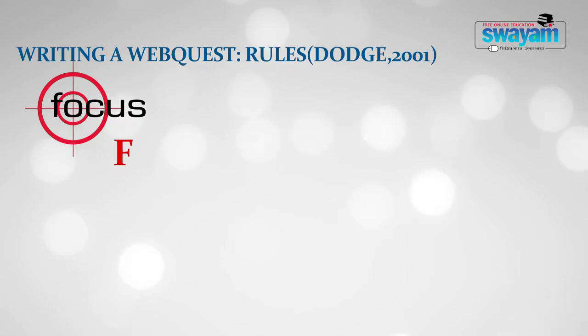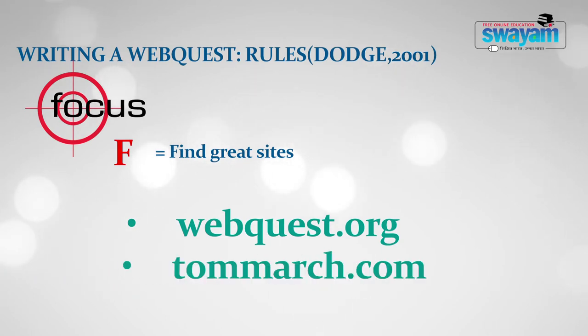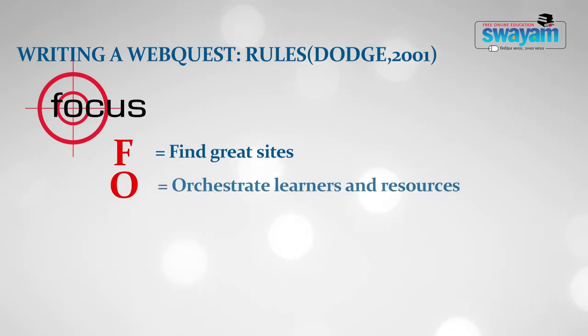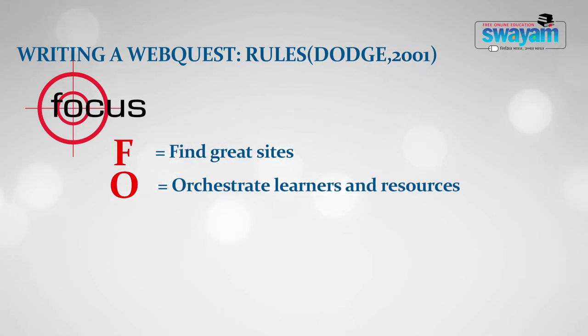Now I will discuss the rules of writing a WebQuest. There are five rules abbreviated as FOCUS. F means you are to find the great sites, as I pointed out — webquest.org or tommarch.com. O stands for orchestrate learners and resources, meaning that learners and the resources provided to them are to be aligned properly so that all learners may be actively engaged with the resources.